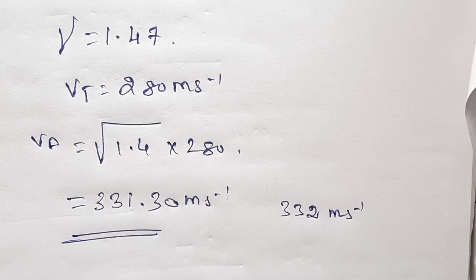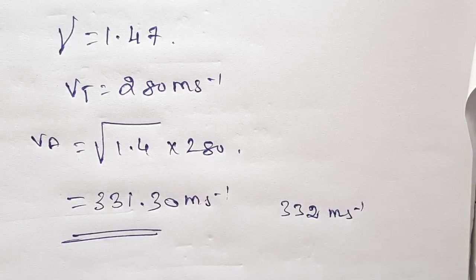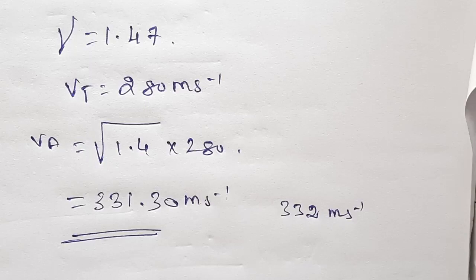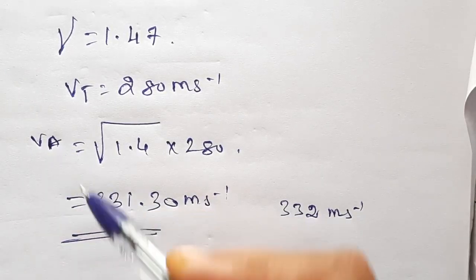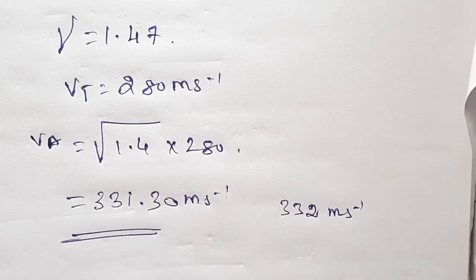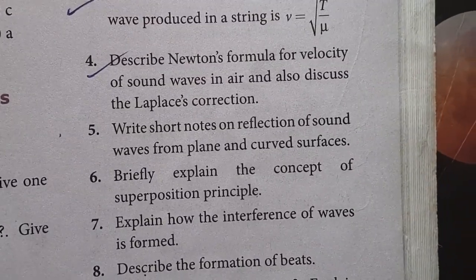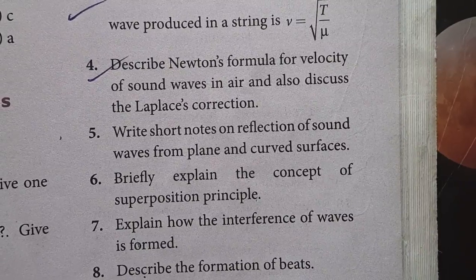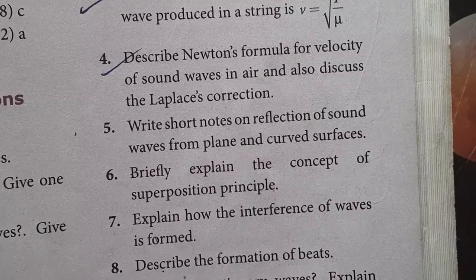So you have to keep in mind: according to Newton's law, propagation is considered to be an isothermal, very slow process, and Boyle's law is used. According to Laplace correction, the process is considered to be adiabatic and the wave propagates in a fast manner, so Poisson's law is used. The velocity of sound waves in air medium is 331.30 m/s. Students, you have to learn this question: describe Newton's formula for velocity of sound waves in air, and also discuss the Laplace correction. Thank you students.